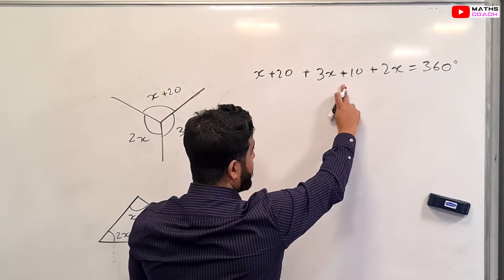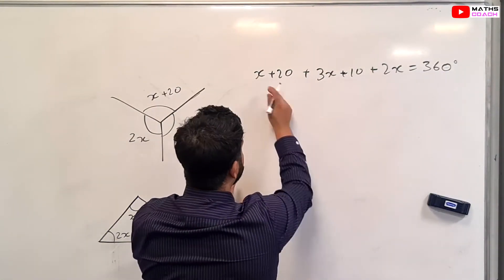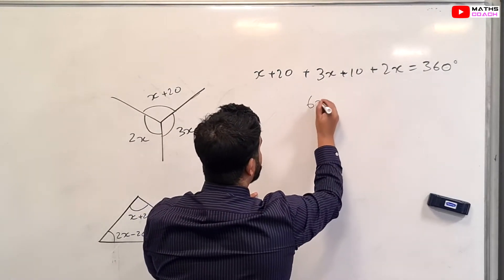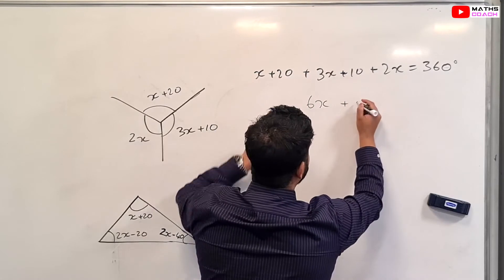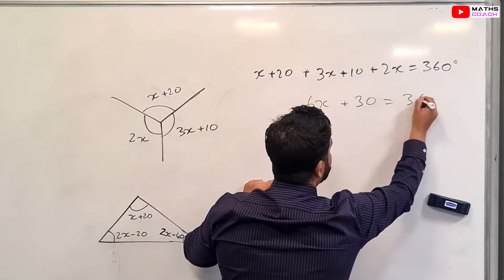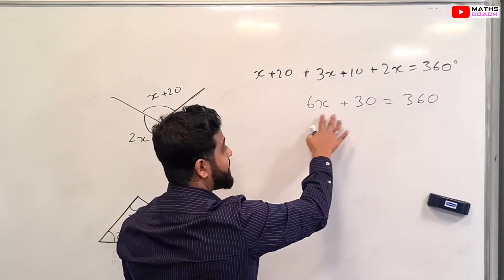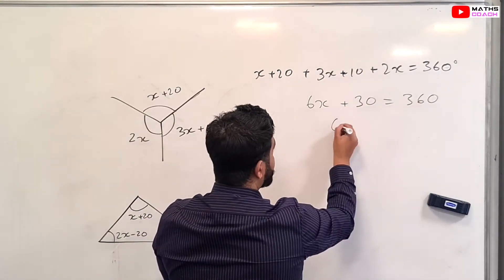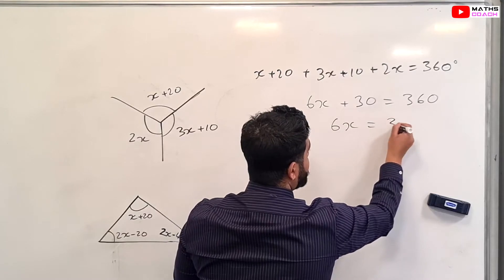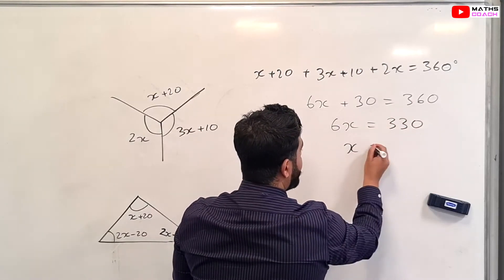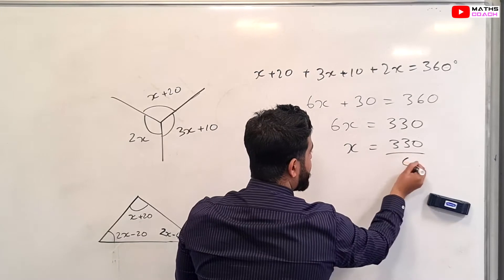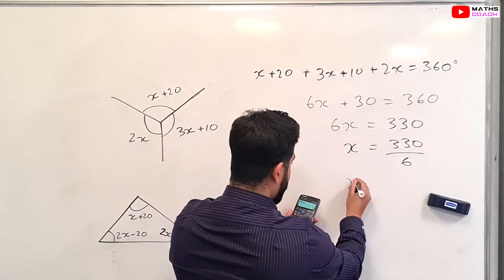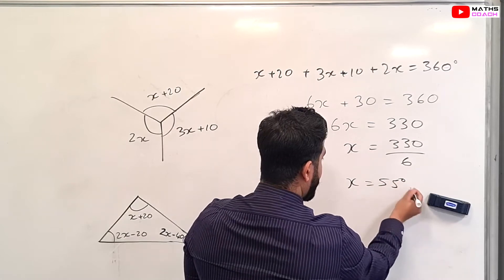So now we've got our linear equation. We collect all the like terms. X plus 3X is 4X, plus 2X is 6X. 20 plus 10 equals 30. So 6X plus 30 equals 360. We take the 30 to the other side, so 6X equals 330. 330 divided by 6 gives us 55 degrees.